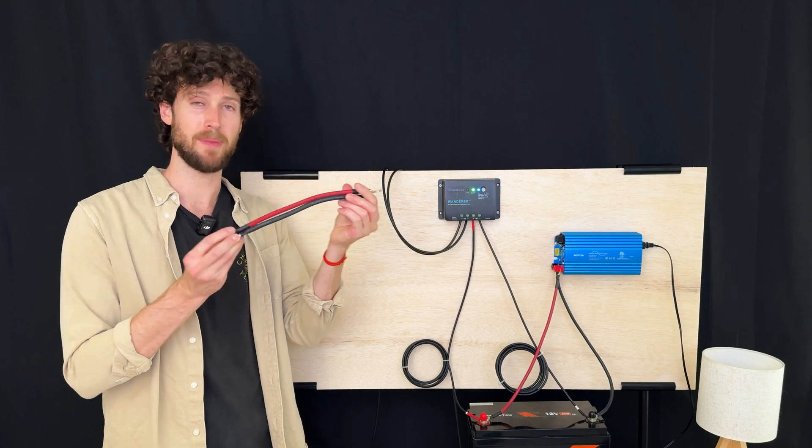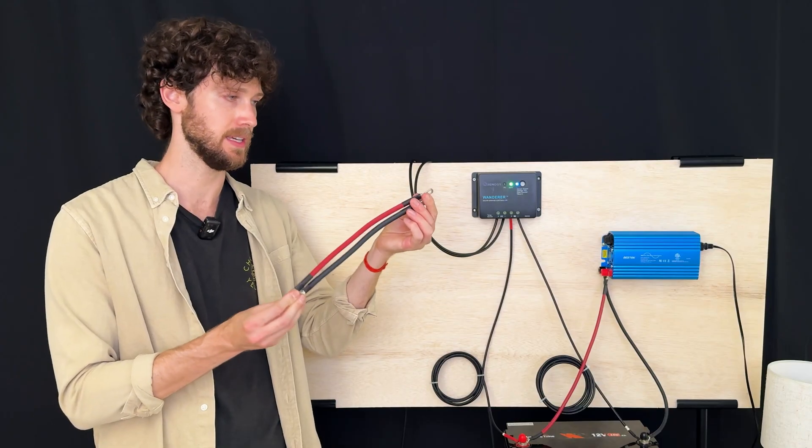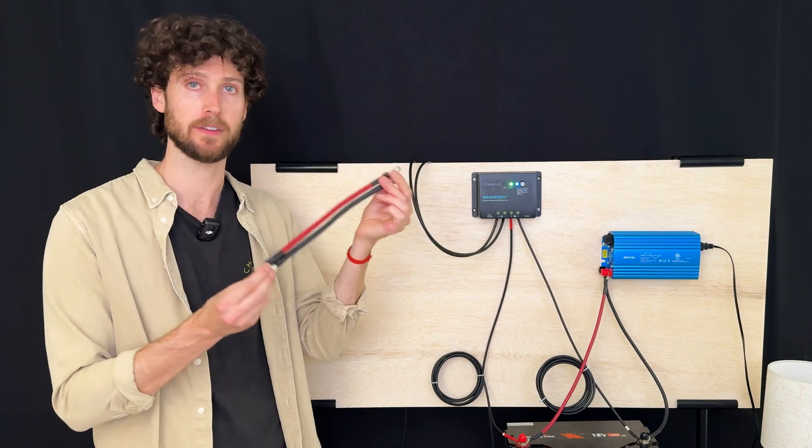You'll also need two battery cables or tray cables, as they're sometimes called. One red, one black is ideal. And they should be sized for the amount of current running through your system.